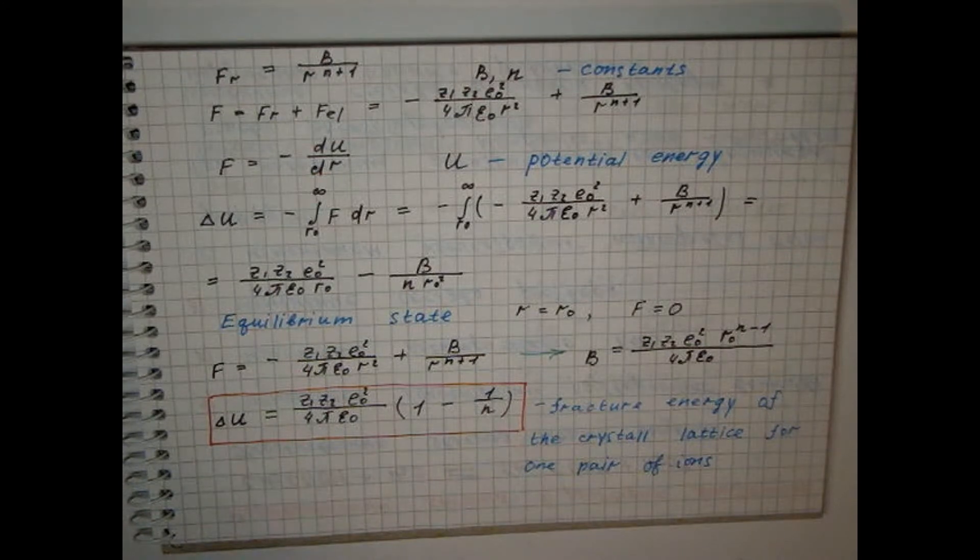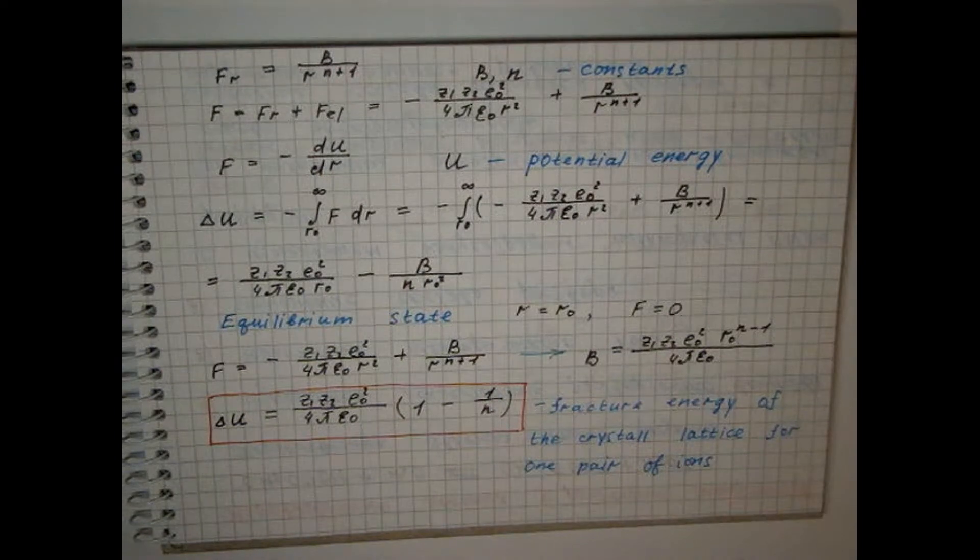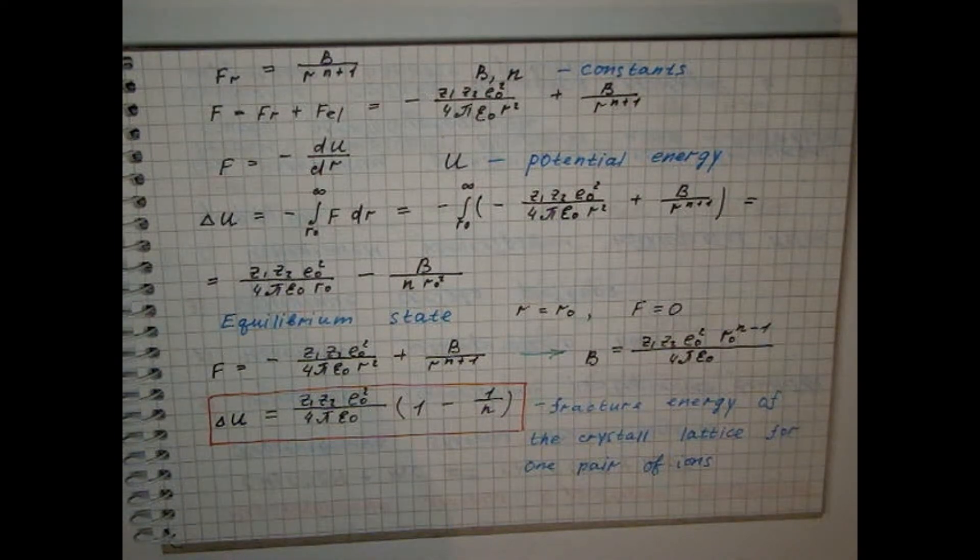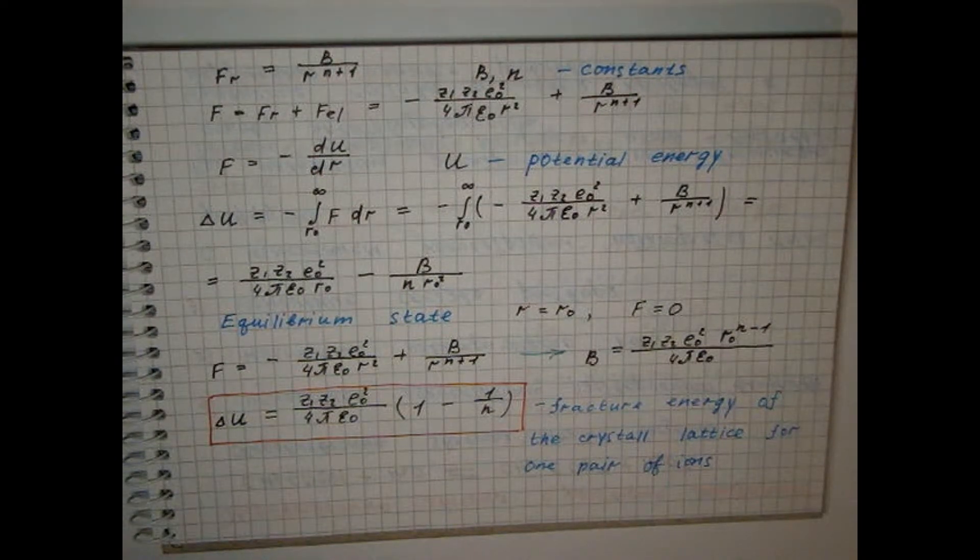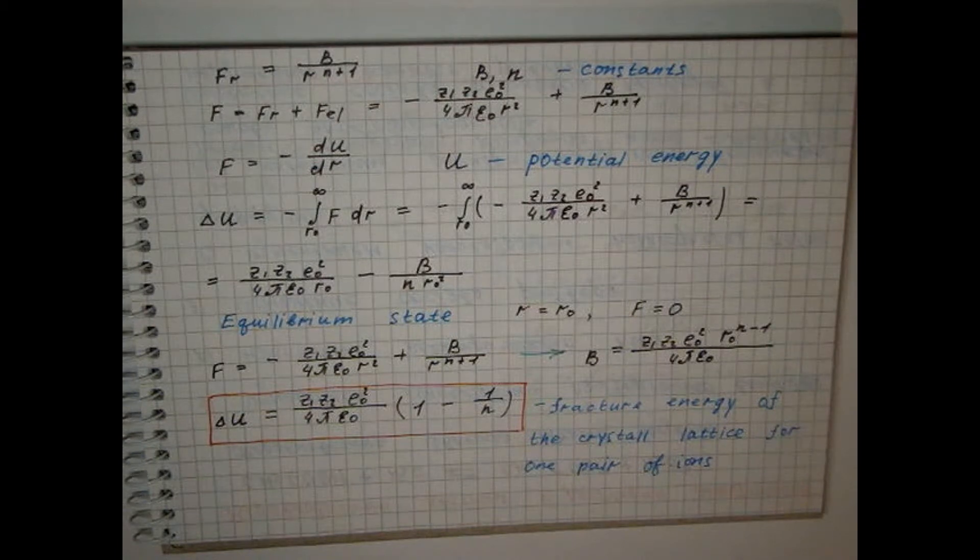To move to the energy of the crystal lattice calculated per mol of substance, it is necessary to multiply the obtained value by Avogadro's number and take into account the interaction between all the ions, which is determined by their relative position in the volume of the lattice. This interaction is determined by the Madelung constant.